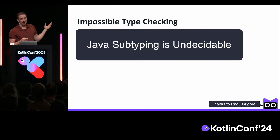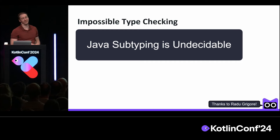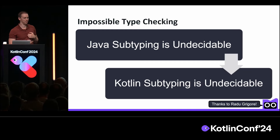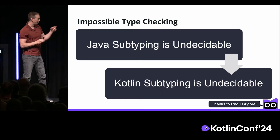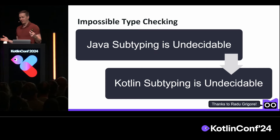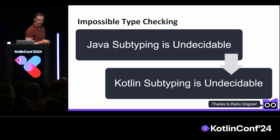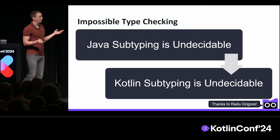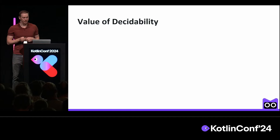As much as we'd love to say this is Java's problem, not ours — unfortunately it is also our problem. The proof by Radu translates to Kotlin just as well. So Kotlin shares in these kinds of issues, and these issues raise a number of problems for Kotlin and for Kotlin developers.